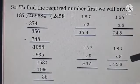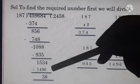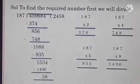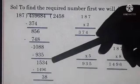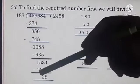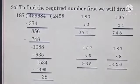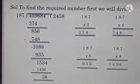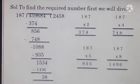187 eights are 1496. Now 14 minus 6, 8. 12 minus 9, 3. 4 minus 4, 0. 1 minus 1, 0. Now we have done division, we got a remainder 38.